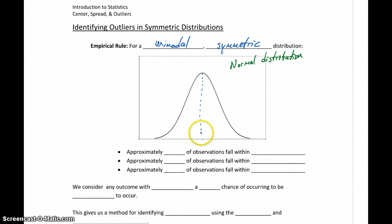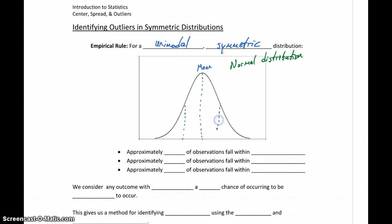Whenever we have a unimodal symmetric distribution like that, our mean is going to be exactly the center of this data set. If we look one standard deviation away from the mean in both directions, we're going to see about 68% of all of our data values falling in that range. So approximately 68% of all data values are within one standard deviation of the mean.